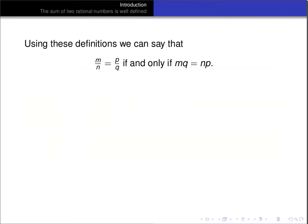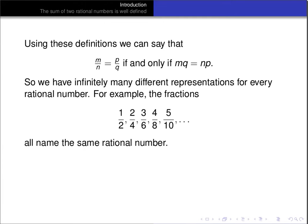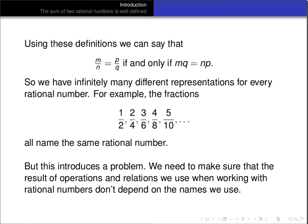Using these definitions, the rational number m over n equals the rational number p over q if and only if m times q equals n times p. So we have infinitely many different representations for every rational number. For example, the fractions one-half, two-quarters, three-sixths, four-eighths, five-tenths all name the same rational number. But that introduces a problem: we need to make sure that the results of the operations and relations we use when working with rational numbers don't depend on the particular choice of names we use.